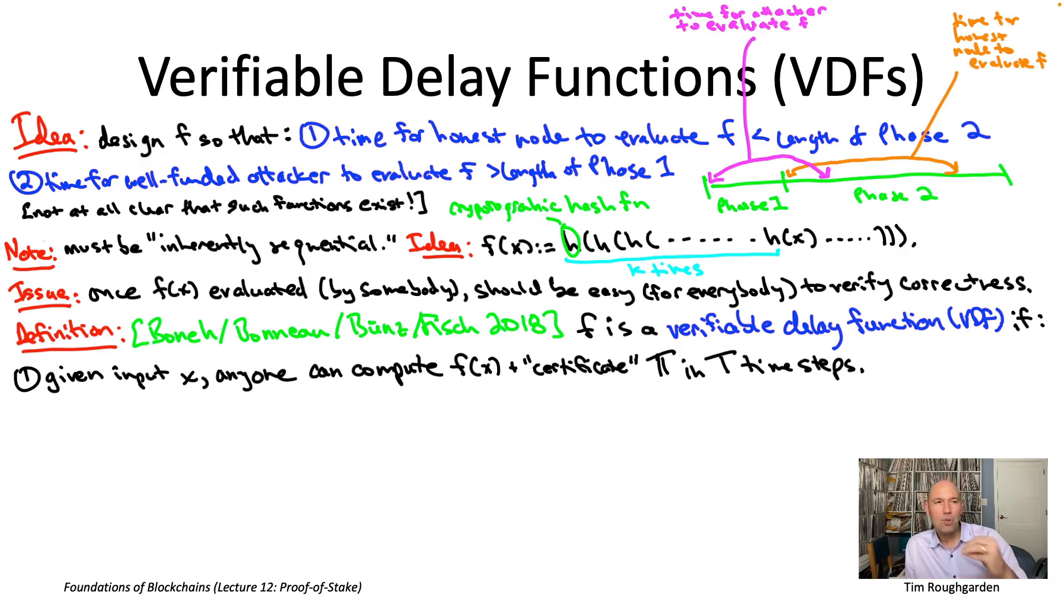So pi is something you generate kind of on the fly as you're evaluating little f for, as we'll see, the purposes of efficient verification.